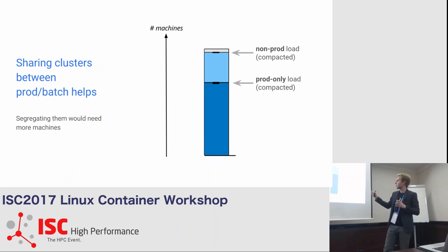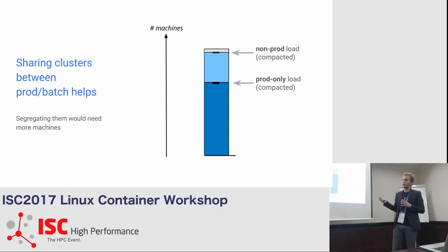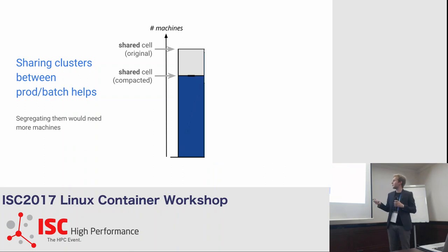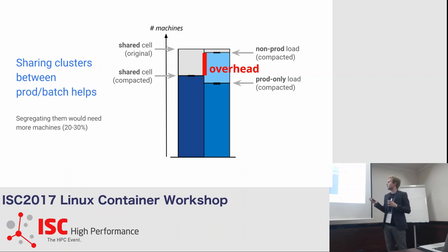They try to split batch jobs from production jobs. Production jobs are things like Gmail and Search — things you have running in production. Non-production workloads are things like backing up data; they run occasionally when there are resources to spare. By combining production workloads and batch jobs on the same infrastructure, they gained a lot of resources back.